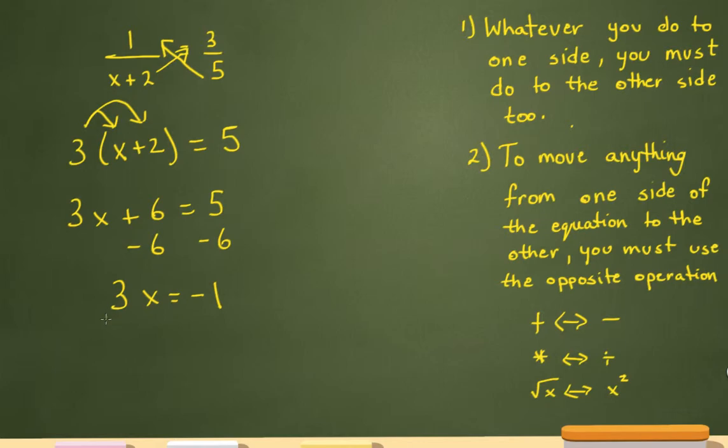3 is being multiplied by x. In order to get rid of the 3 and leave x by itself, this is the opposite operation, divided by 3, divide by 3 over here as well, which leaves me with x equals negative 1 over 3.